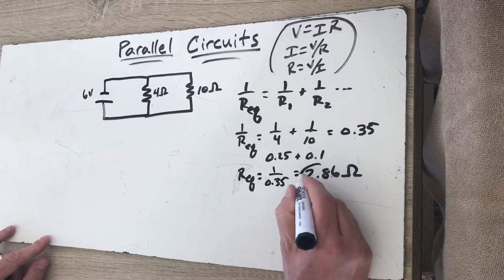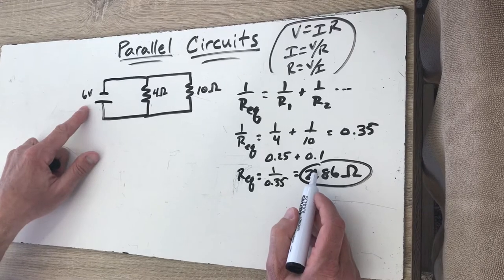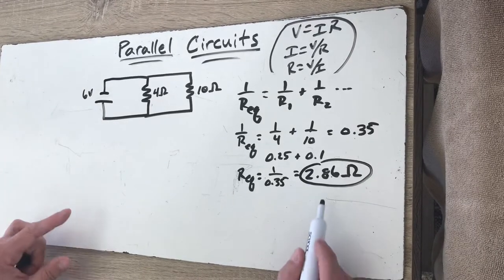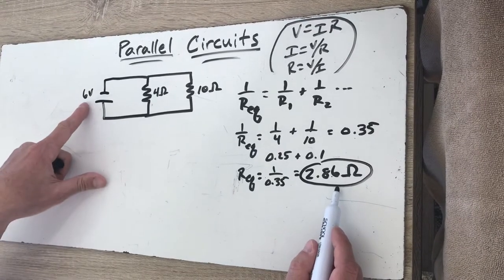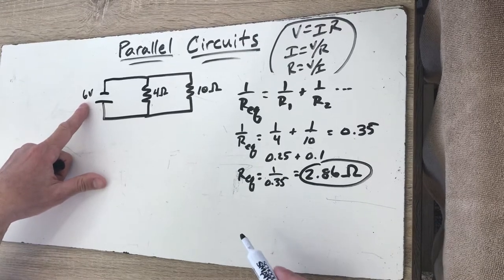There is the overall resistance. That's what the battery experiences. We talked about what does the battery see? Well, it can't really see anything but it's basically looking at this as though it's a single pathway that only has a 2.86 ohm resistor. That's it.